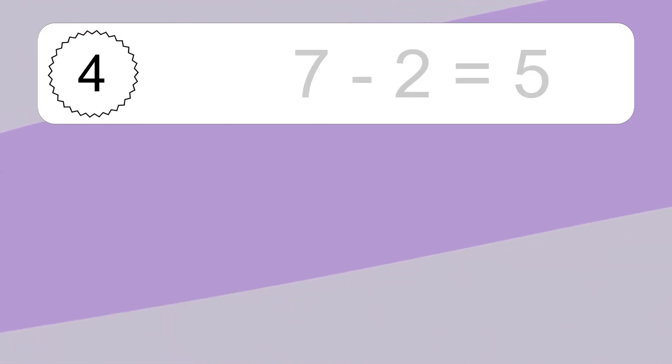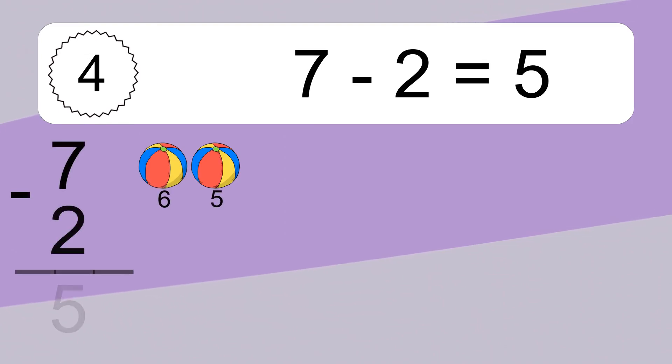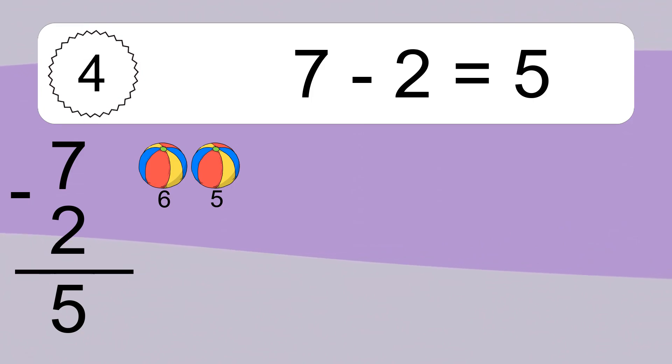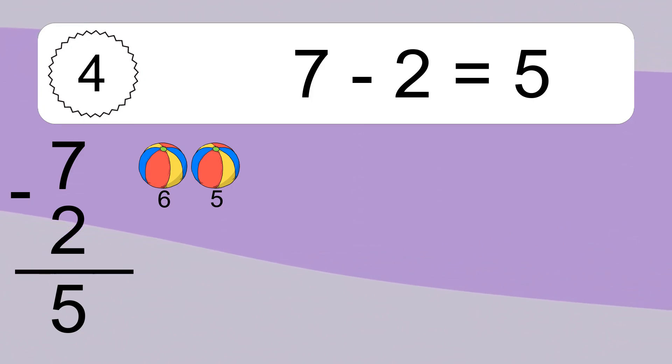17 minus 2 equals what? 7 minus 2 equals 5. Let's count it: 6, 5.